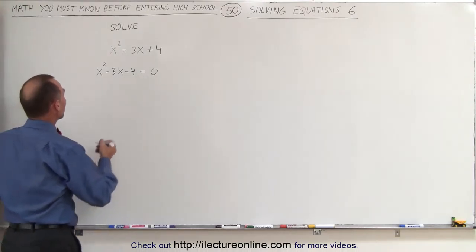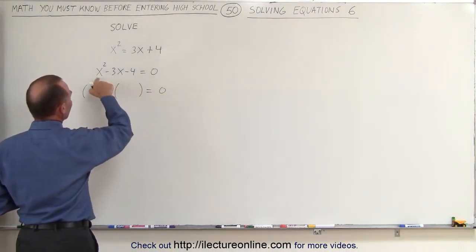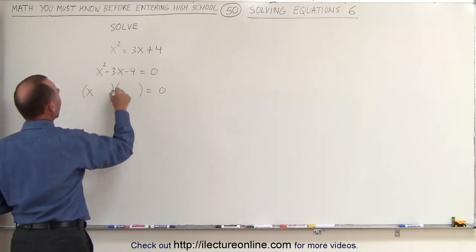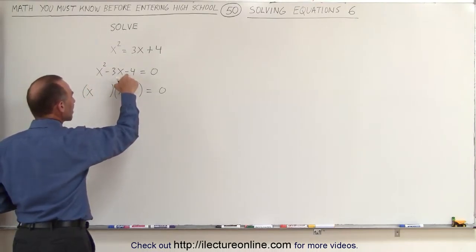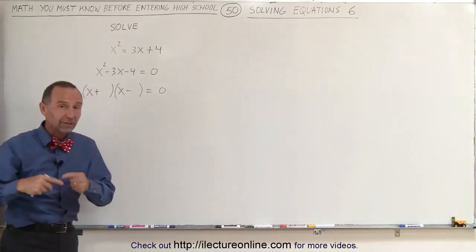So if it is, it would be written as the product of two binomials that would then be equal to zero. And since we have an x-squared here, that means we need an x and an x. And since it's a negative here, we need a positive and a negative. So when we multiply, a positive and negative gives us a negative.